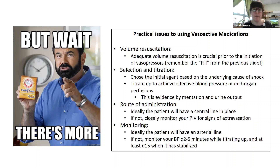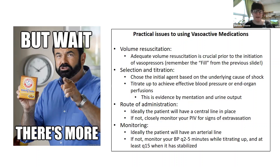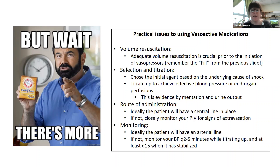Regarding route of administration: for vasopressors and inotropes, ideally the patient should have a central line, but it's not absolutely required. Never withhold a life-saving medication just because you only have a peripheral IV. Make sure your peripheral IV flushes well, ideally get blood return to confirm it's not infiltrated, and frequently assess it. If you can establish central access, that's ideal. You can also put these medications through an IO safely if that's your only other option.